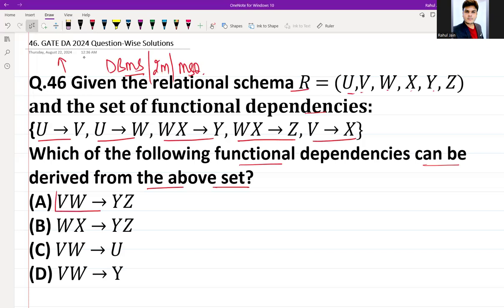First one is option A: VW → YZ. So we can derive X using this, right? If we can derive X, then we are having V, W, and X. Because we can derive X, so W and X commonly can derive Y.